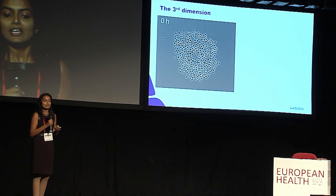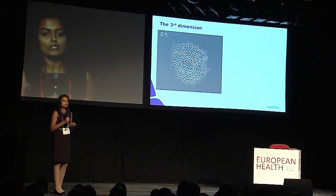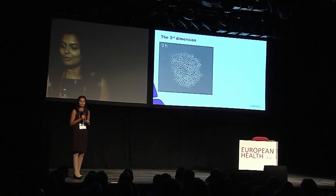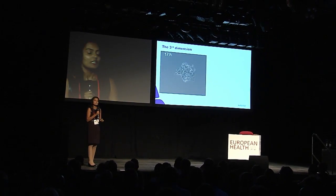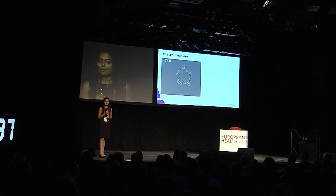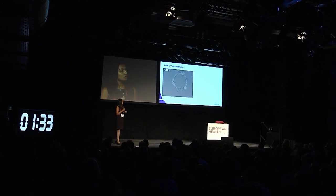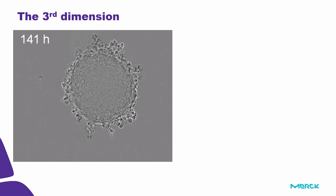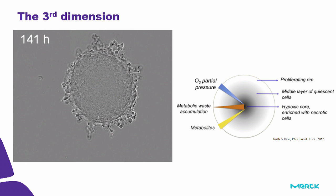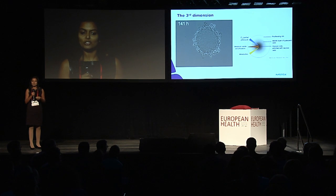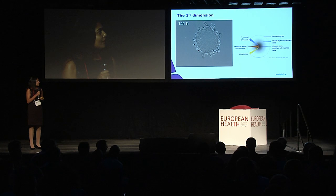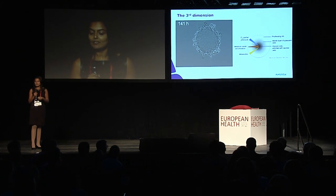At Merck, we're tackling the disease in all its complexity by using new tools combined with reductionist approaches. We take advantage of the 3D spheroid model that takes advantage of the natural tendency of the cells to aggregate into 3D spheroids. These structures mimic in vivo conditions such as spatiotemporal gradients of oxygen and nutrients, biomechanical cues, and cell-cell interactions.